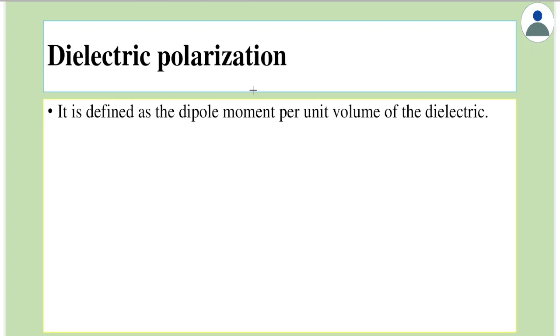Hello everyone, let's study dielectric polarization. It is defined as the dipole moment per unit volume of the dielectric. We call capital P as dielectric polarization. It is given as the net dipole moment per unit volume.